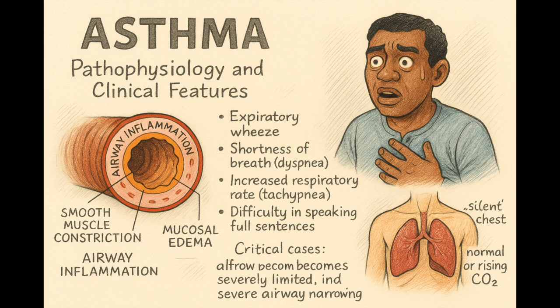From a pathophysiological standpoint, asthma involves constriction of bronchial smooth muscle, reducing airway diameter and increasing resistance. Activation of inflammatory cells, especially eosinophils and mast cells, leads to increased mucus production, worsening obstruction.